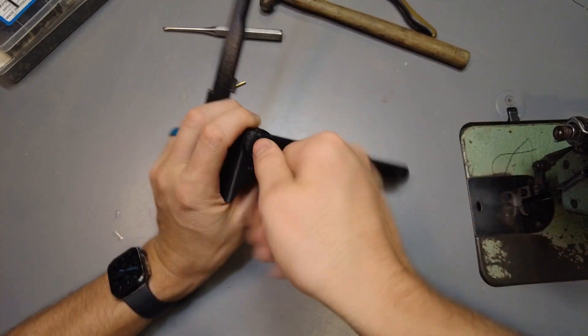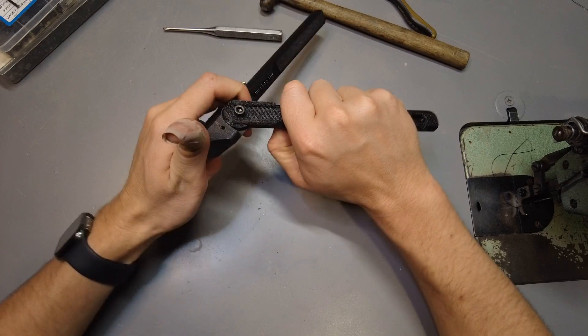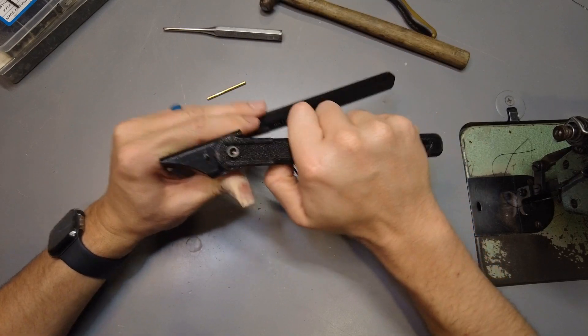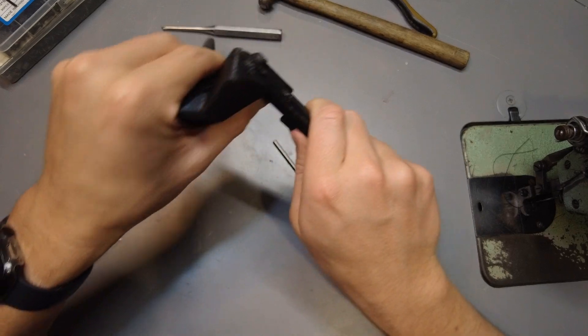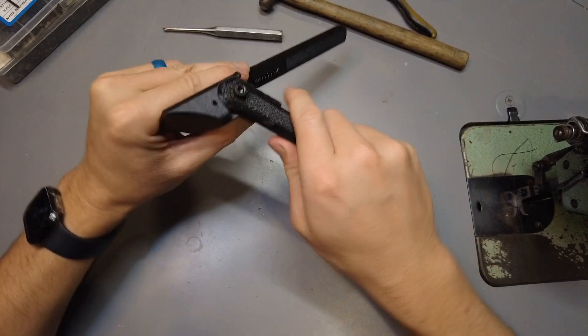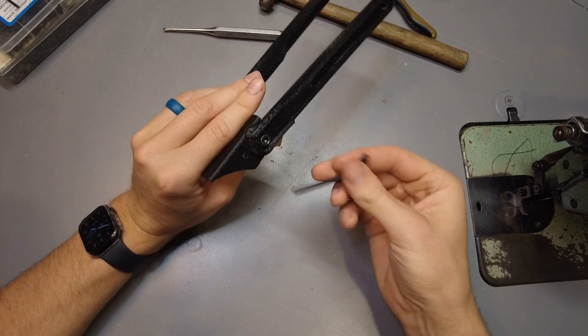When you first screw it down on there, just get it snug. It doesn't need to be really tight because you've still got to be able to move it back and forth. There we go. That's pretty good. Maybe you can loosen it up just a fuzz. That works pretty well.